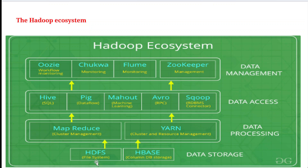HDFS is responsible for storage and access. HBase is for storage. MapReduce is one more component. YARN is responsible for resource management. Apache Hive is responsible for storing relational data in rows and columns. We also have Apache Pig, Mahout for machine learning, Apache Avro, Apache Sqoop, Apache Oozie, Apache Chukwa, Apache Flume, and Apache ZooKeeper — all different components of Hadoop, all built on top of the Hadoop core.